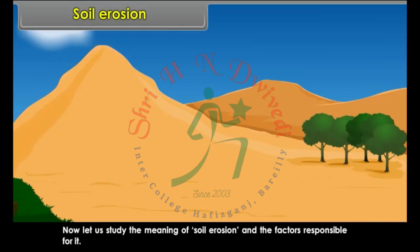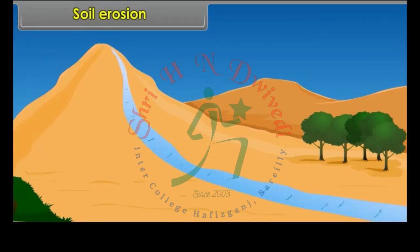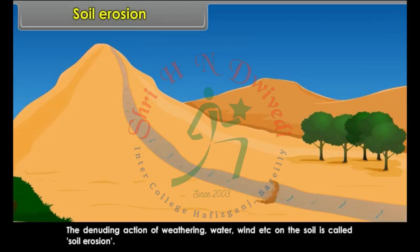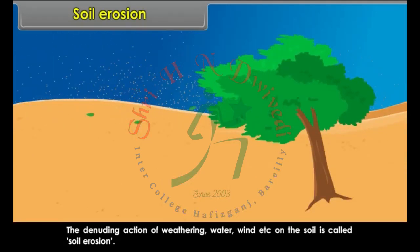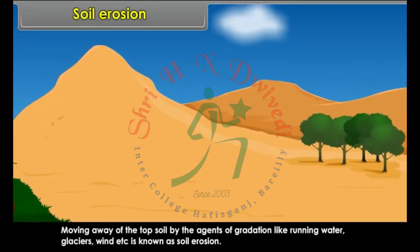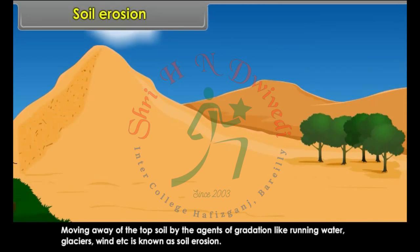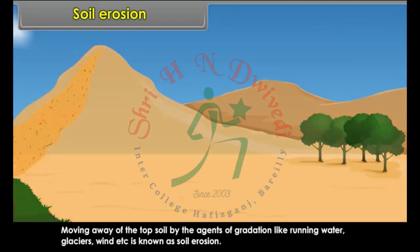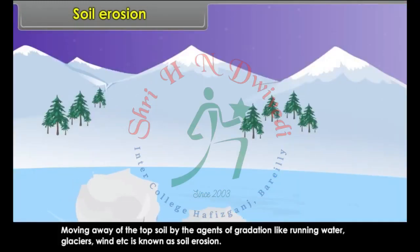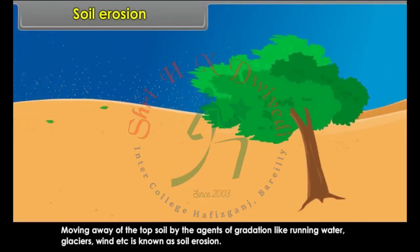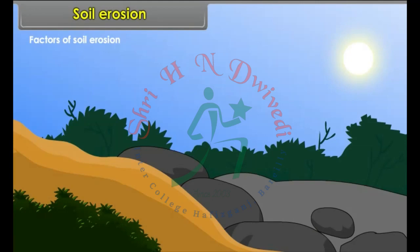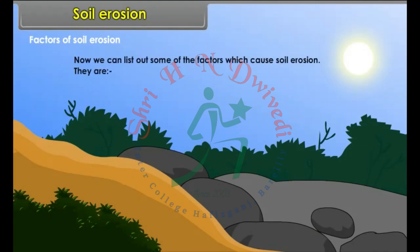Soil Erosion. The denuding action of weathering, water, wind, etc. on the soil is called soil erosion. In other words, the moving away of the top soil by the agents of gradation like running water, glaciers, wind, etc. is known as soil erosion. Factors of soil erosion include: deforestation, heavy and torrential rain, overgrazing, winds, and slope of the land.